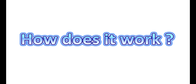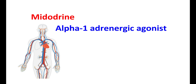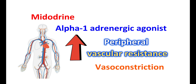Midodrine is approved to manage vasovagal syncope by increasing supine blood pressure. It is one of the alpha-1 selective adrenergic agonists that increases peripheral vascular resistance. It activates the alpha-1 adrenergic receptors located on blood vessels, increasing vasoconstriction and peripheral vascular resistance, resulting in increased arterial and venous tone, which raises blood pressure.